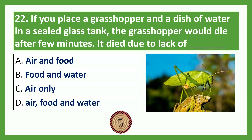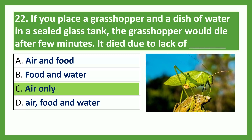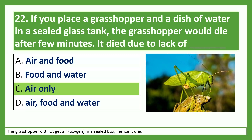If you place a grasshopper and a dish of water in a sealed glass tank, the grasshopper would die after a few minutes. It died due to lack of — Option A: air and food; Option B: food and water; Option C: air only; Option D: air, food and water. The answer is Option C, air only. The grasshopper did not get air, i.e. oxygen, in a sealed box, and hence it died.